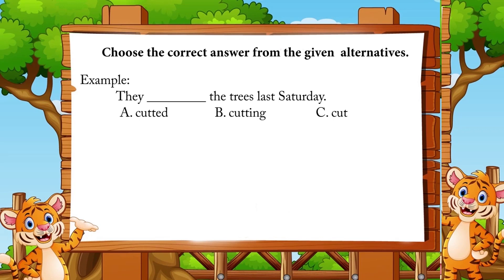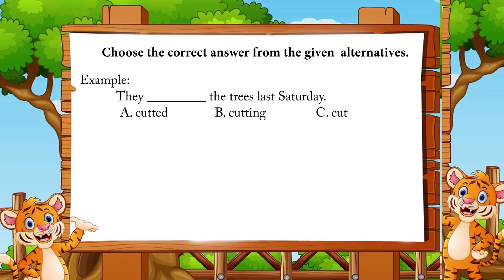Now do the following exercise. Choose the correct answer from the given alternatives. Example: 'They blank the trees last Saturday.' A. Cutted, B. Cutting, C. Cut. The answer is C — cut — because the past form of cut is cut as it is. It is past tense, last Saturday, so the answer is C: cut.